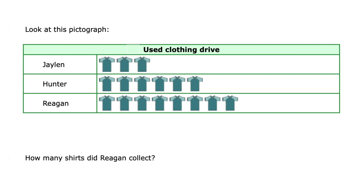In this pictograph we can see there was a used clothing drive, and we can see how many each person got. The question says: how many shirts did Reagan collect? Go to the Reagan row and count those shirts to see how many he collected. If you thought Reagan collected eight shirts, you are right — you can pat yourself on the back.